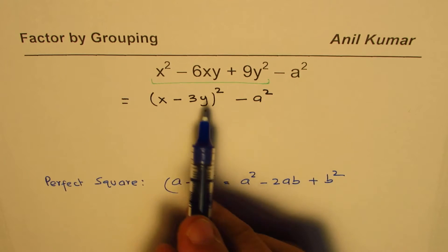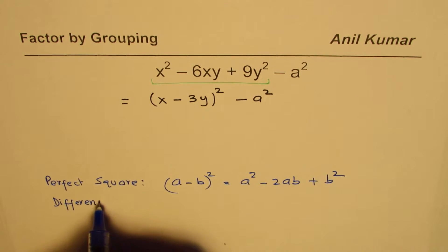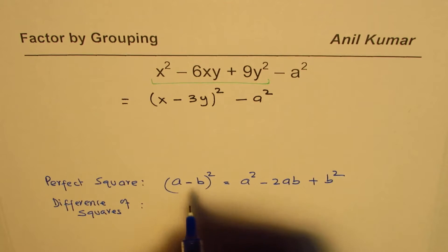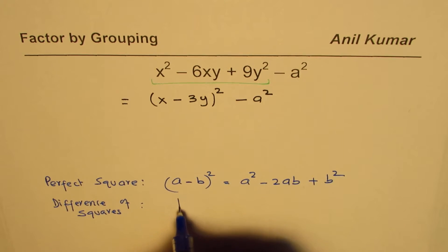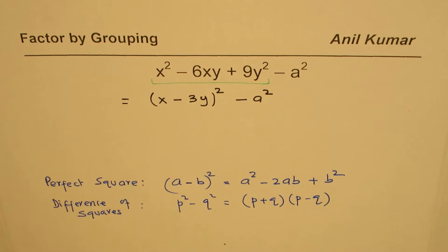Now you can use the difference of squares formula. If I write p squared minus q squared, then we get p plus q times p minus q, correct?